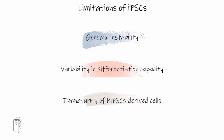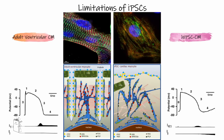Another major challenge of iPS differentiation is around reproducibility. Most differentiation protocols produce heterogeneous mixtures of cells whose cellular constituents fluctuate in abundance from run to run, implying that cells of interest have to be purified for downstream use. Also, although methods to differentiate iPS into beating cardiomyocytes have recently been optimized and commercialized, the resulting cells remain immature with regards to their structure, morphology, and gene expression when compared to adult cardiomyocytes.